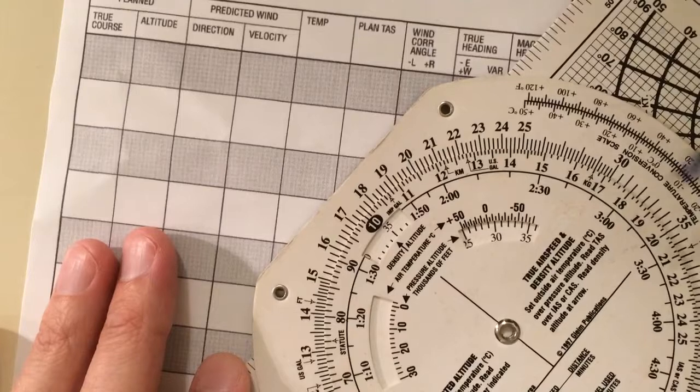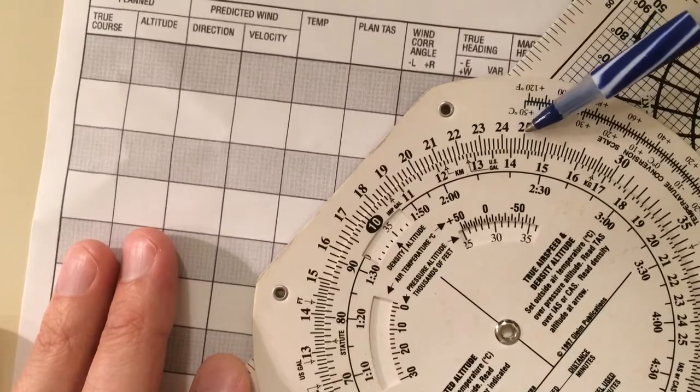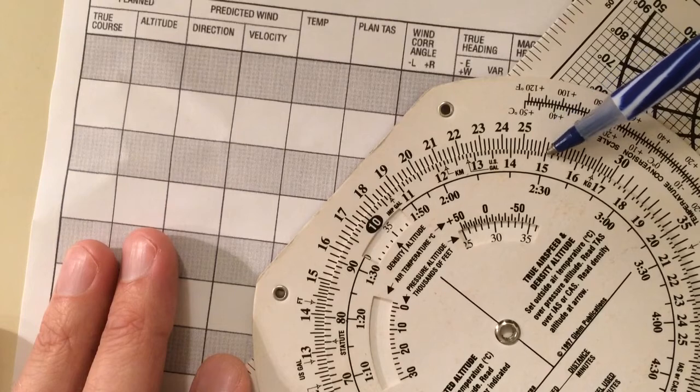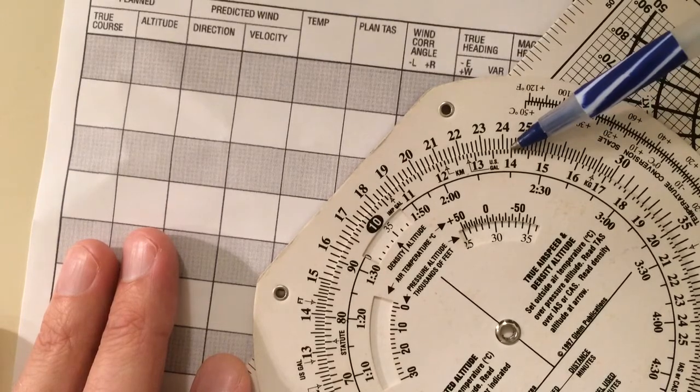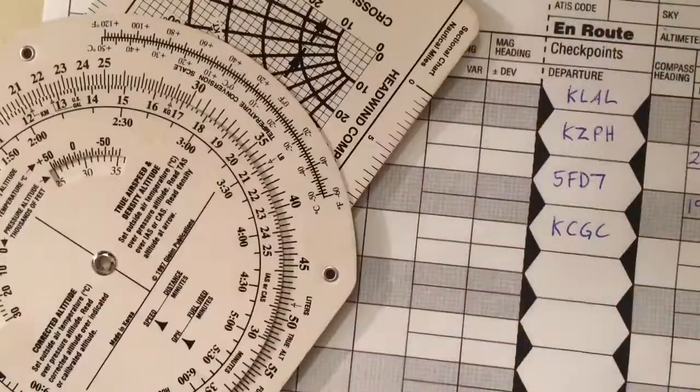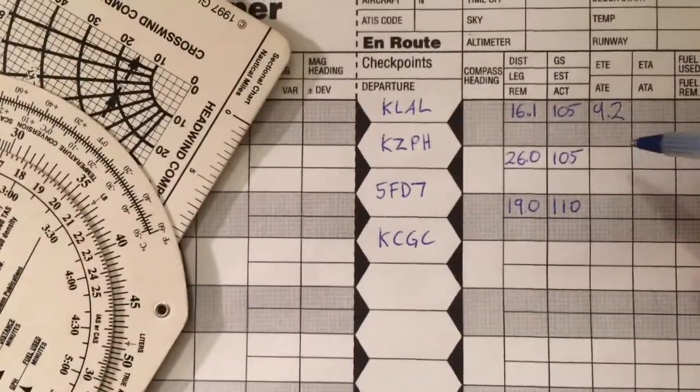So if we look on our E6B for a 26, we don't have one, but we can infer that this is 24, this is 25, so this must be 26. And we simply go straight to reading minutes. So at the bottom here, we can see that it's 14.9. So our second time is 14.9.